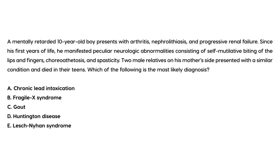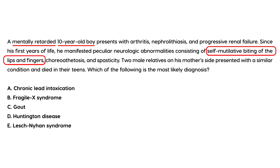Here's a clinical vignette: a mentally retarded 10-year-old boy presents with arthritis, nephrolithiasis, and progressive renal failure. Since his first years of life he manifested peculiar neurologic abnormalities consisting of self-mutilating biting of his lips and fingers, choreoathetosis, and spasticity. Two male relatives on his mother's side presented with a similar condition and died in their teens. This kind of presentation is very specific for Lesch-Nyhan syndrome, and the genetics clue confirms it — the answer is choice E.